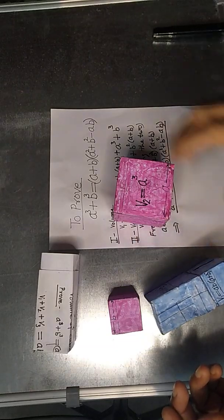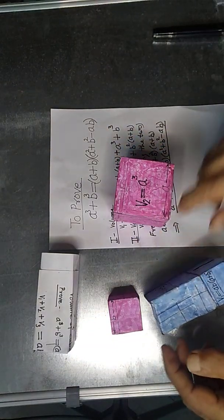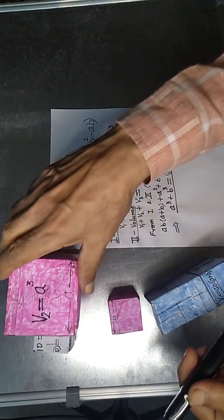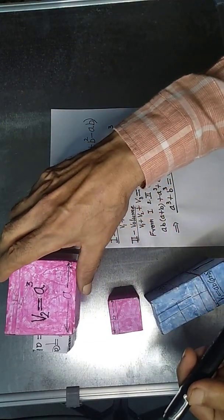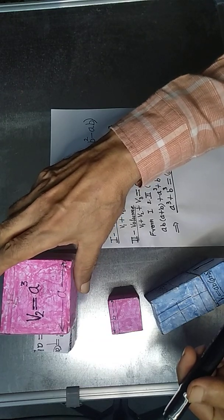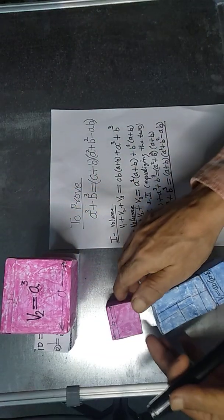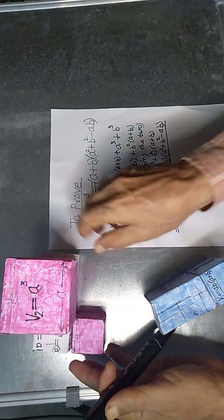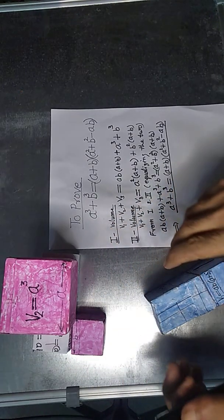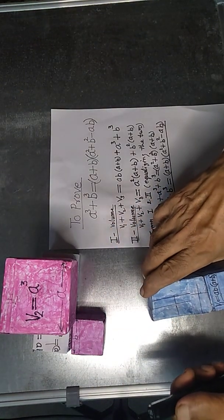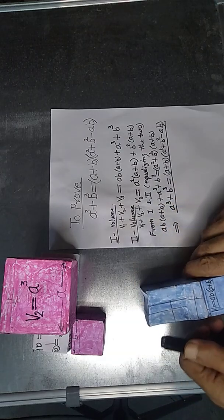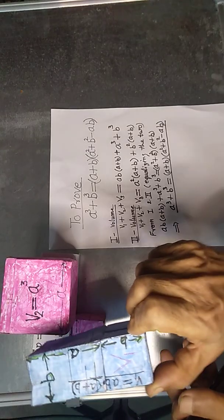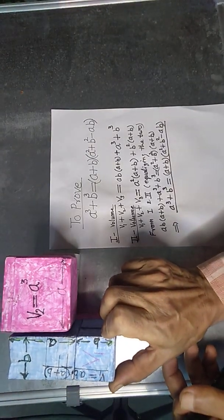We arrange the three structures with the help of this base. We have the cube of side a over the base, and by the side of it another cube is placed. The third cube is placed over here.